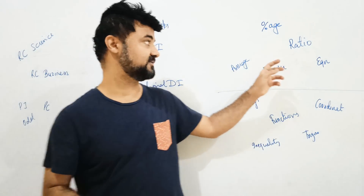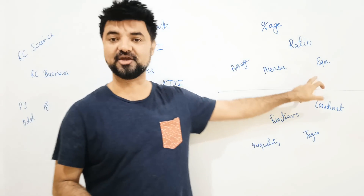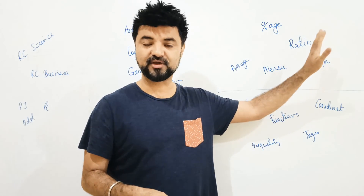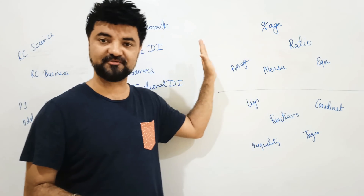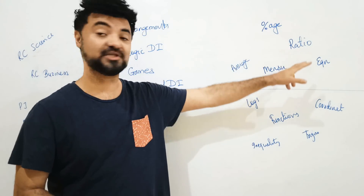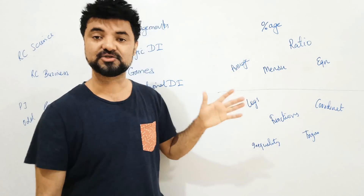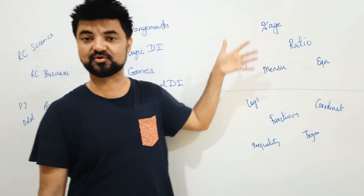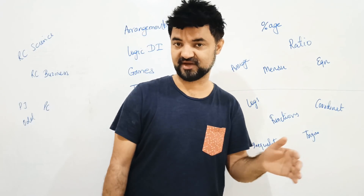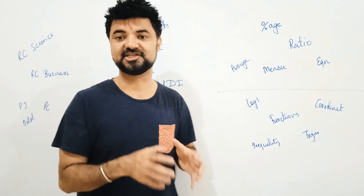Especially for the quant section — if you focus on percentage, ratios, averages, mensuration, and equations (simple equations and quadratic equations), each of them is worth 2 to 3 questions. So around 10-12 marks' worth of questions come from these 5 topics. What I am going to do is over the next 5 days become expert in these 5 topics.